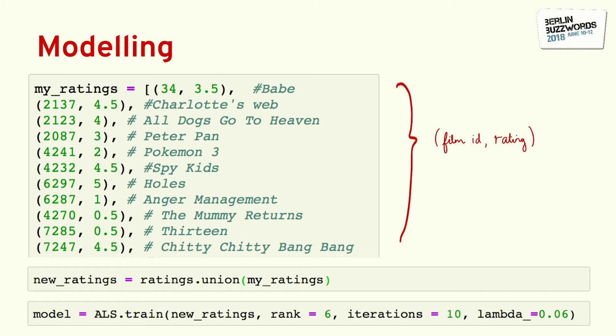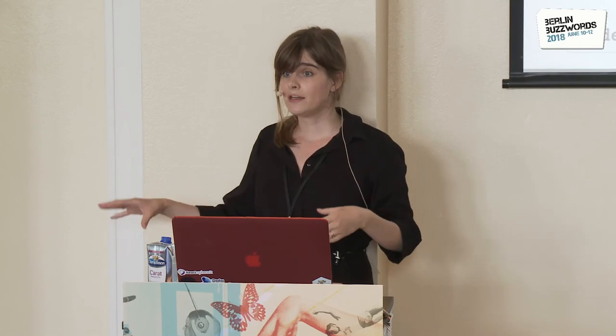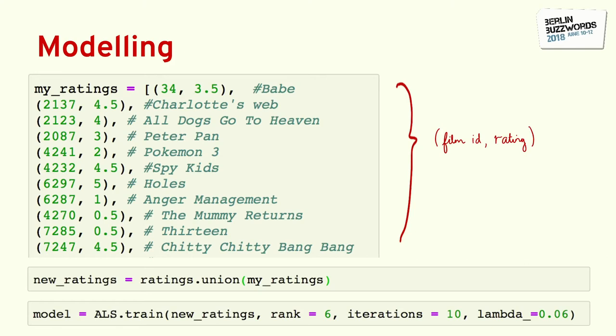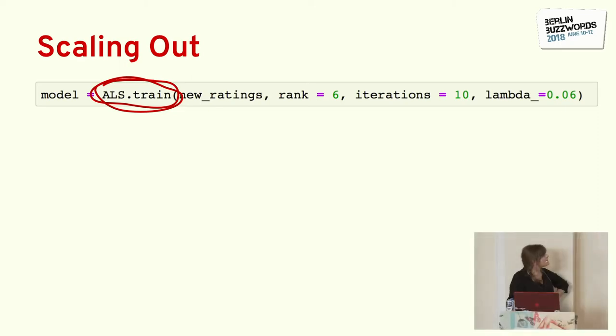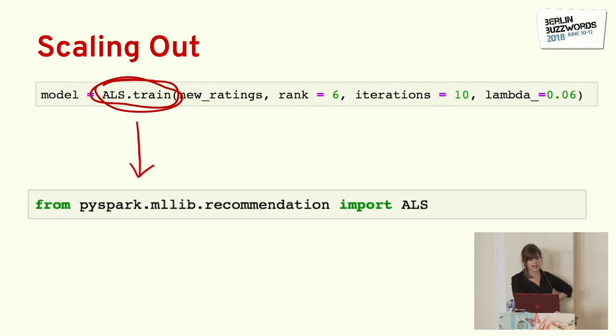I'm appending the ratings that I made to the 26 million ratings in the Movie Lens data set. Then I go ahead and build a model. You'll have to take my word for it that those three parameters — rank, iterations, and lambda — have been selected optimally. The ALS train function implements the algorithm from that paper. But this isn't code I wrote — I'm using an off-the-shelf implementation. This was the first huge difference between research and production. The idea of using code that someone else has written was not something I'd done or been encouraged to do throughout my PhD, and yet it brings so many advantages. This code is tried and tested, and it does what it says it will because loads of other people have used it first.